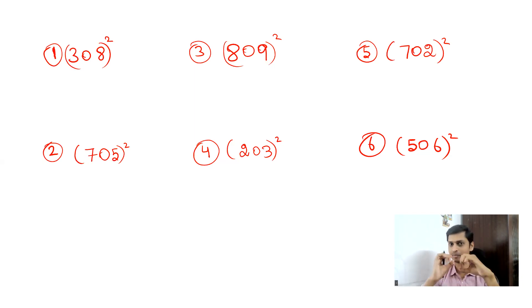Here you can see some mathematical shortcuts: 308 square, 705 square, 809 square, and three more questions. I'm going to solve four questions and you have to solve the next two questions without pen and paper and type the answer in the comments without fail.